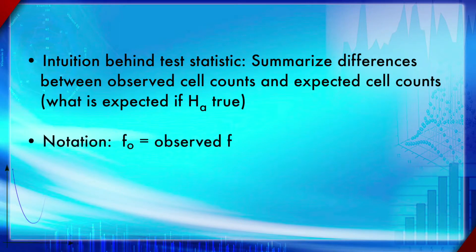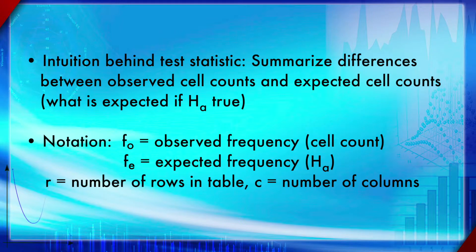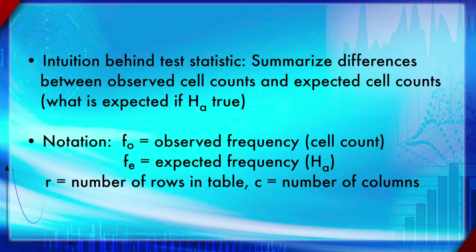The alternative hypothesis H1 is that the variables are statistically dependent. The intuition behind this test is to summarize the differences between observed cell counts and expected cell counts — what is expected if the null hypothesis is true. Remember that in this test the expected cell count is derived from the observed one. There is no external model; from the observed values we calculate the expected cell counts.